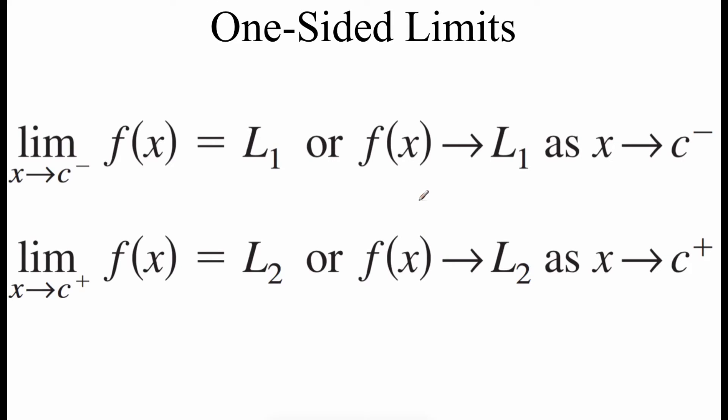One way we saw that a limit wouldn't exist is if our function approached a different number as we came in from the left or as we came in from the right. But sometimes we still want to look at what's happening around that value, so we can use one-sided limits to help us out there. So if we take a look at this first one, we've got the limit of f of x as x approaches c with this little negative sign on it. That little negative sign means we're approaching from the left-hand side. If we compare that to directly below it, we've got this superscript plus sign. That means we're approaching from the right-hand side. So since we're just focusing on one side at a time, that's why these things are called one-sided limits.